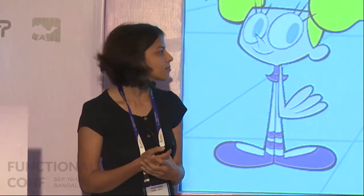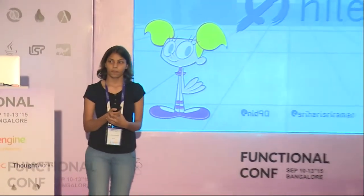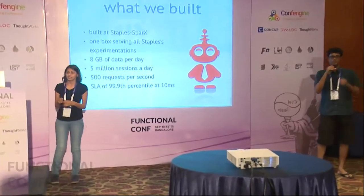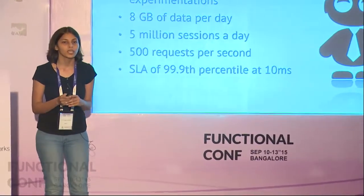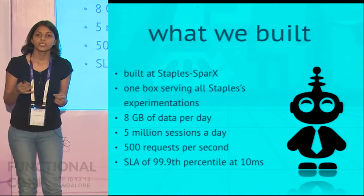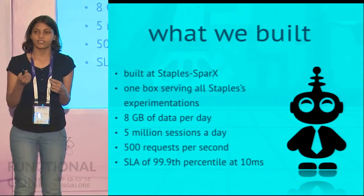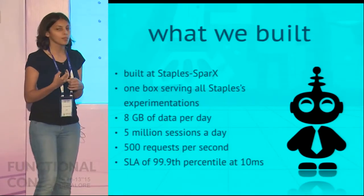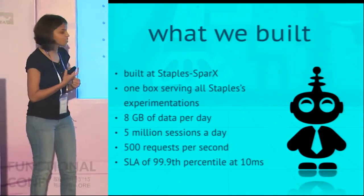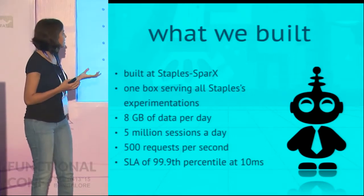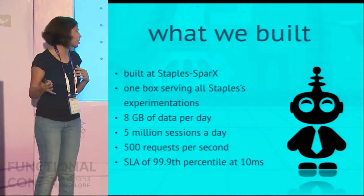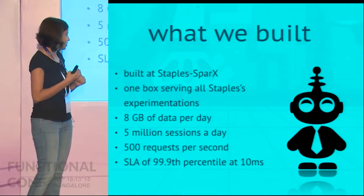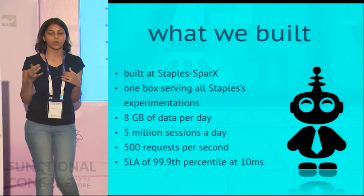I am Nivedita, and I am Srihari, and today we are going to talk about our experience in building an experimentation platform in Tojo. We are both from Nilenso, a software cooperative based in Bangalore. Over the last year and a half, we have worked with a subsidiary of Staples called Staples Sparks, which uses machine learning, predictive modeling, and other systems to make niche products for Staples. What we have built with them is a multivariate testing platform which serves all of experimentation's needs of Staples in one box. We have a very strict SLA of 99.9 percentile at 10 milliseconds, as we sit synchronously between all requests that go to staples.com.